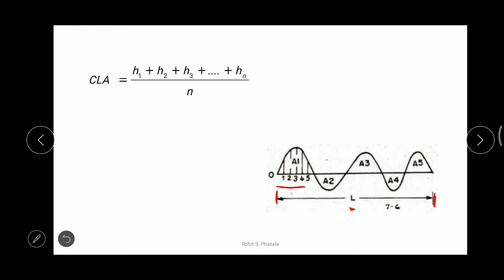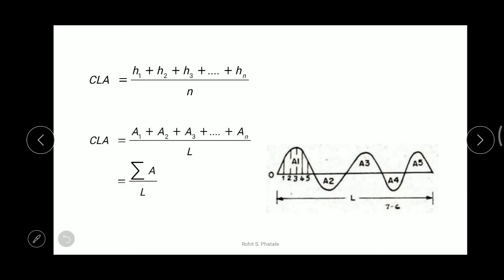This is the formula for the centerline average method. The height H1 goes from point 1 up to the surface; then H2, H3, H4, H5 and so on from the reference line. We take the addition of H1 through Hn and divide by the number of sections or parts. That gives us the average value, known as the centerline average.